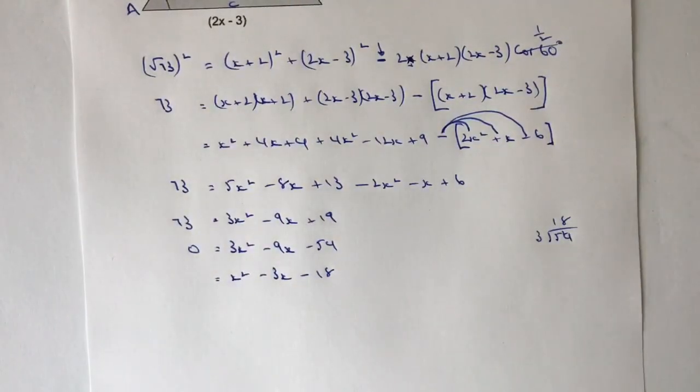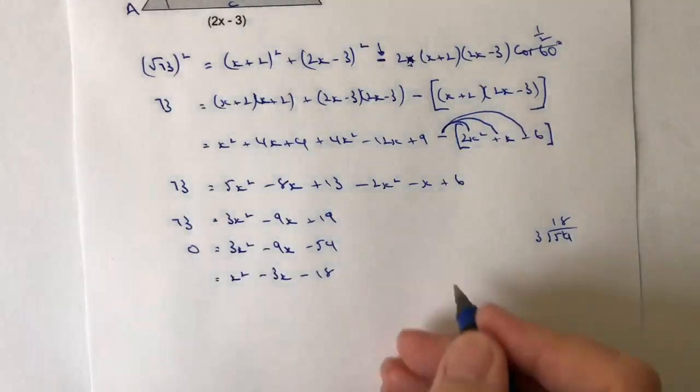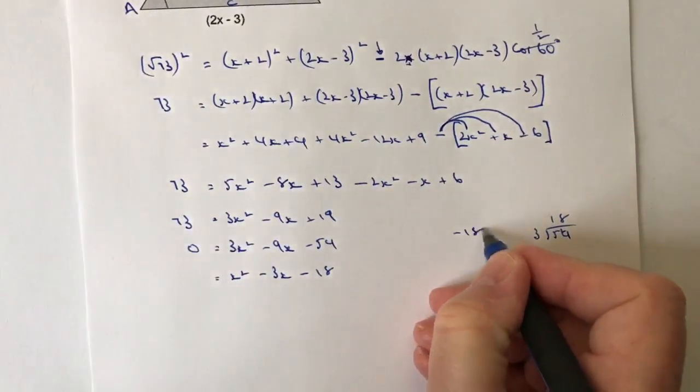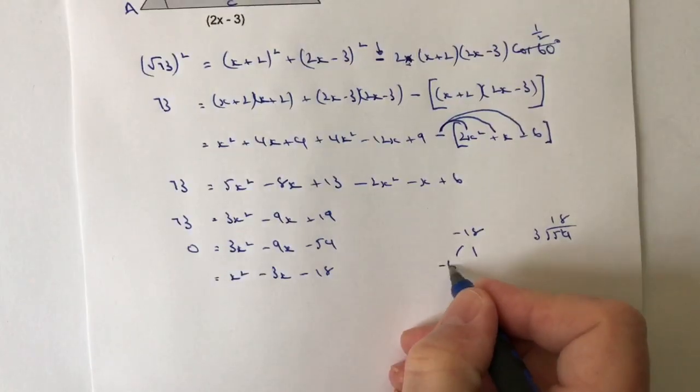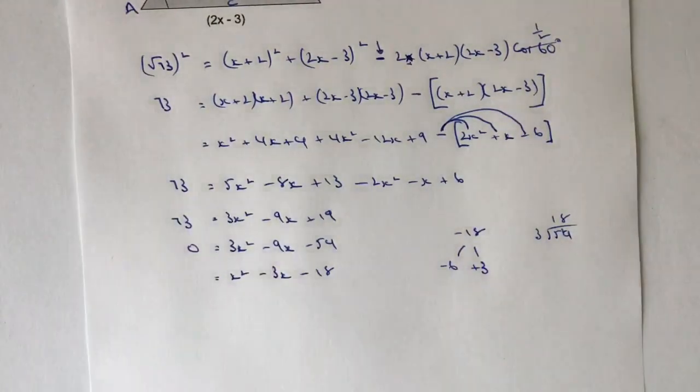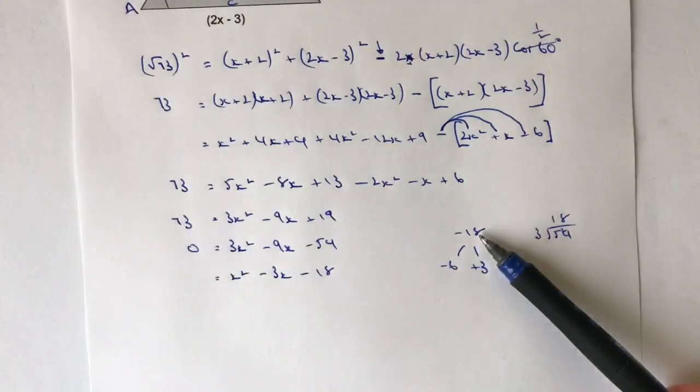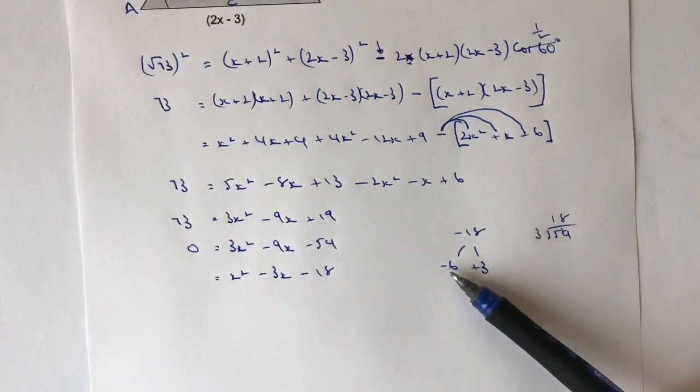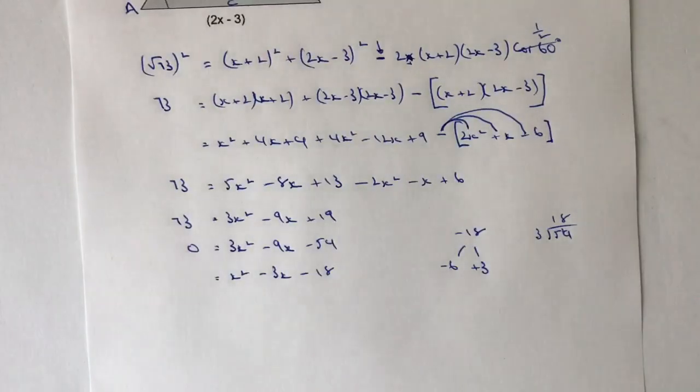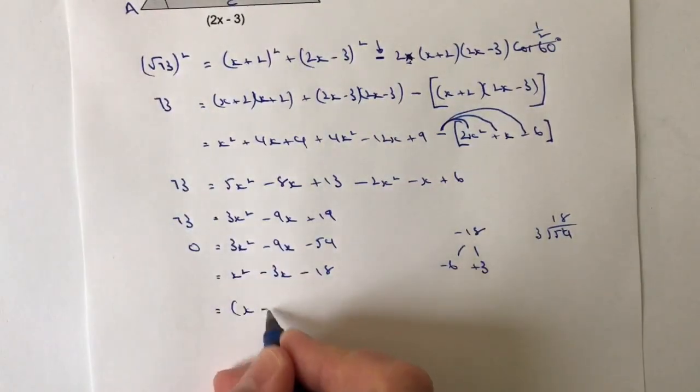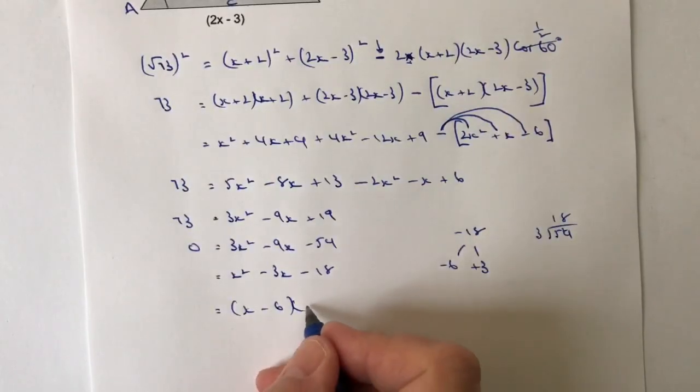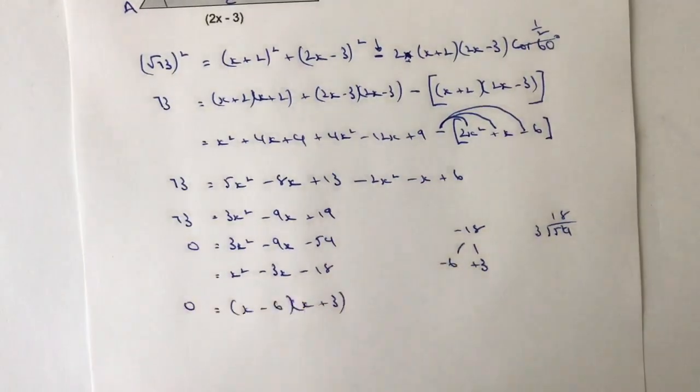And then I'm looking for two numbers that when I multiply them together are going to make minus 18, and when I add them together are going to get minus 3. Well, the two numbers that spring to mind from minus 18 would be minus 6 and plus 3. Hopefully you can see that those two numbers when I multiply them together make minus 18, and when I add them together make minus 3. So I can write this now as x minus 6 multiplied by x plus 3 and that equals 0.